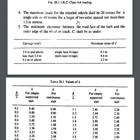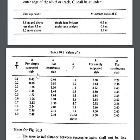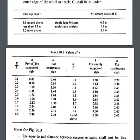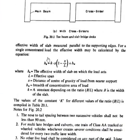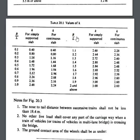The maximum load for wheeled vehicles shall be 20 tons for a single axle and 40 tons for a bogie of two axles spaced not more than 1.2 meter centers. The minimum clearance C is between the road face of the curb and the outer edge of the wheel or track. The K values used in the effective width formula are given — please save this image.